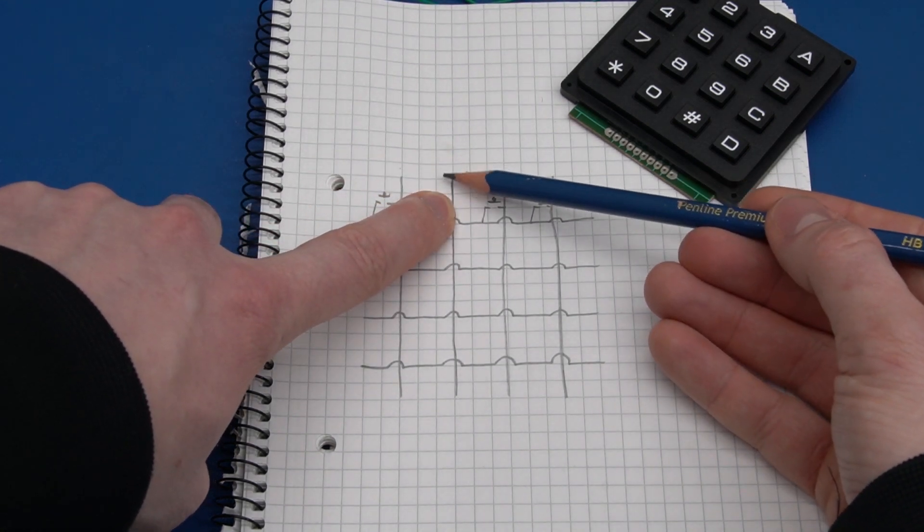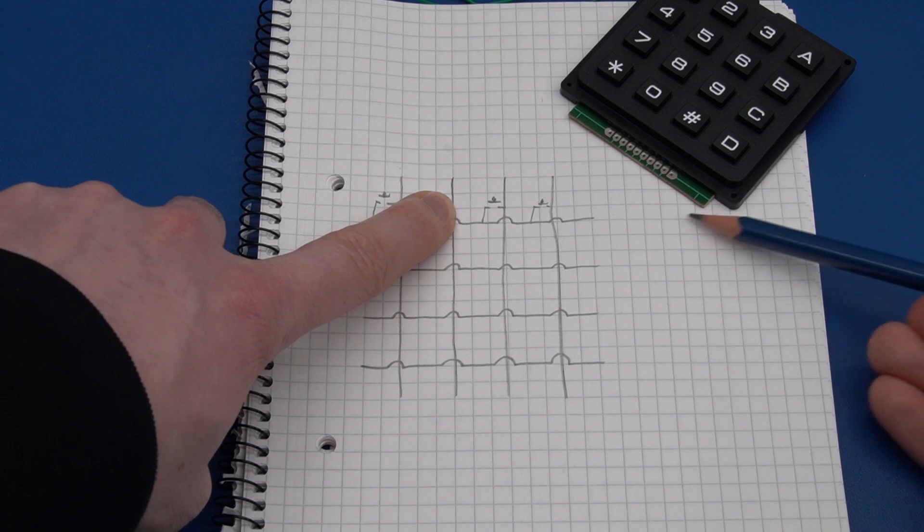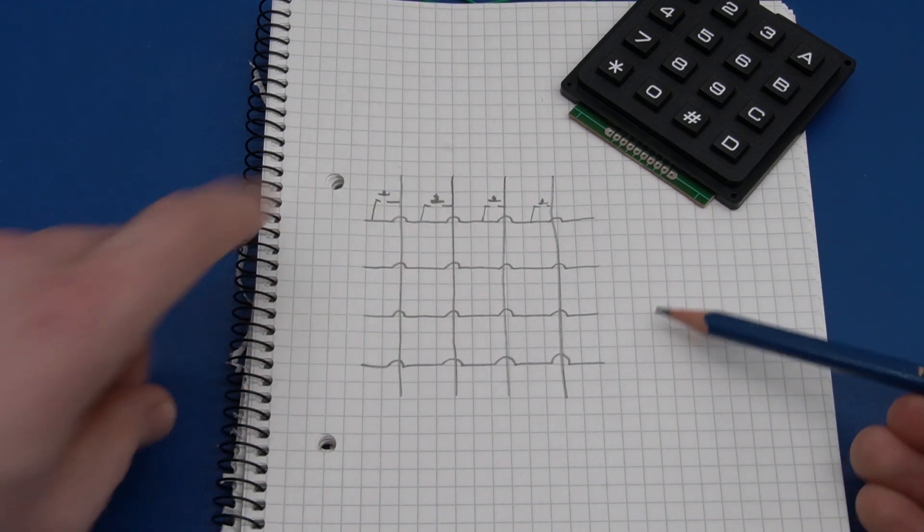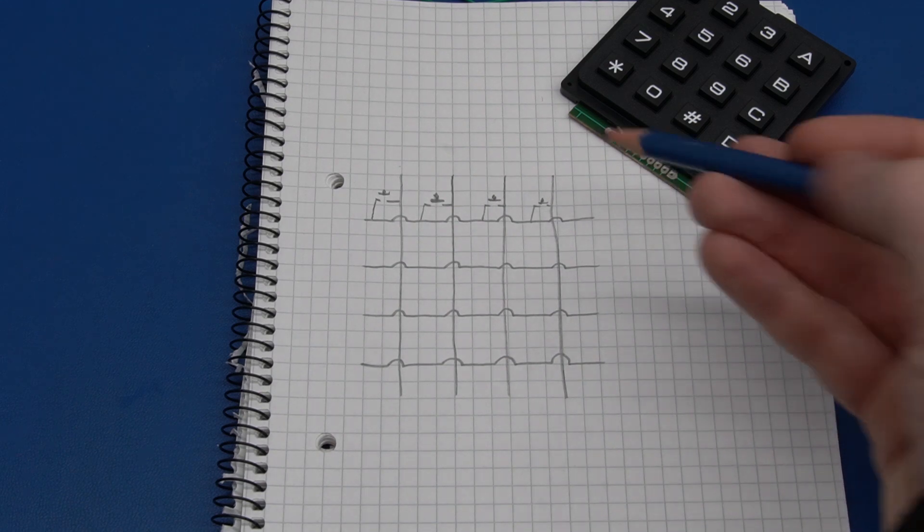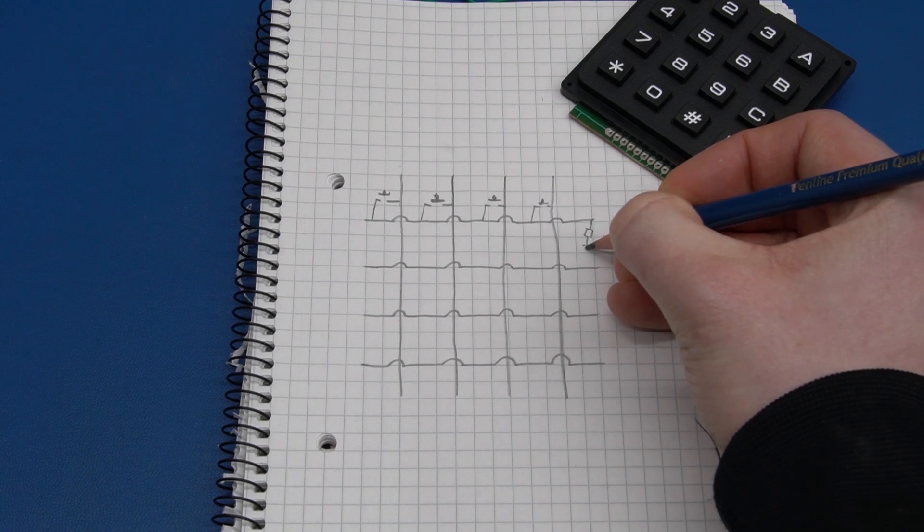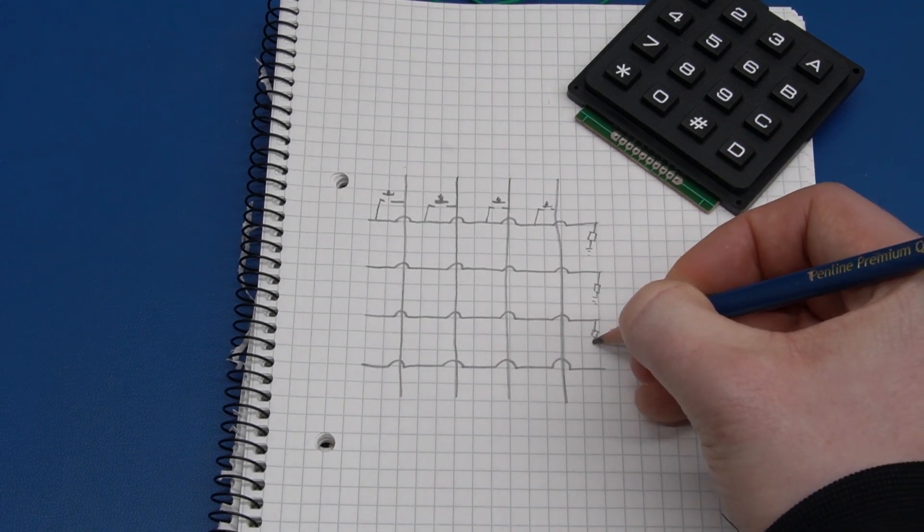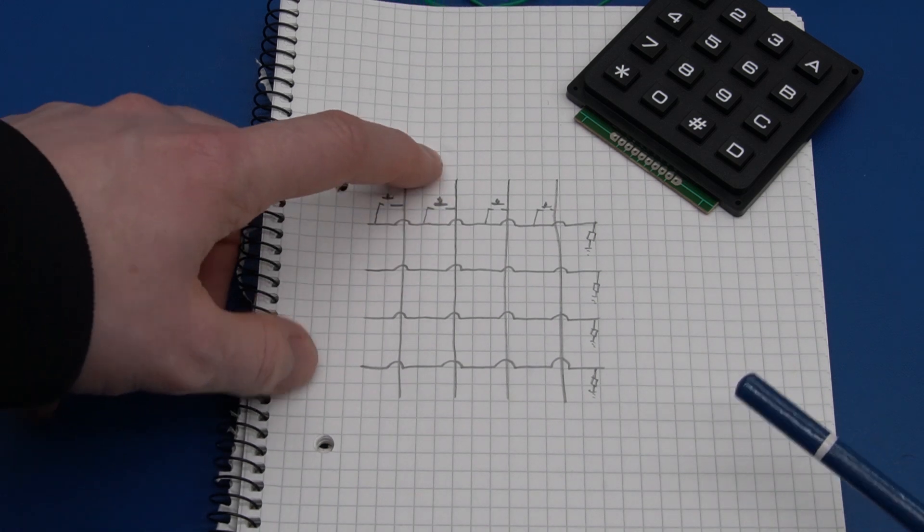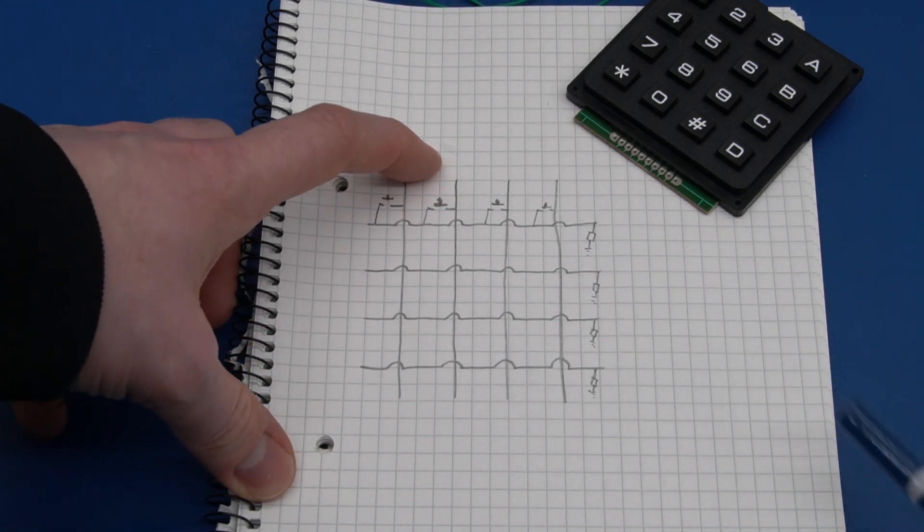at column number 2, the first row here will be on and the rest will be low. We have pulldowns on here to make sure that when we release the button, it goes to a low state.